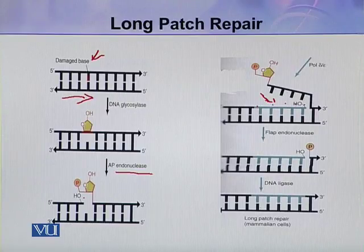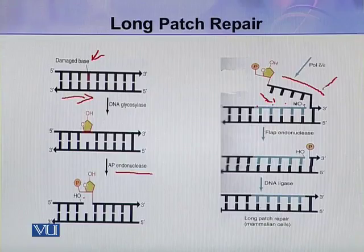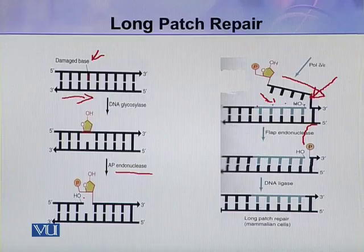The new nucleotides are added to the 3'-hydroxyl end, and the other strand is gradually displaced. After that, flap endonuclease cuts the displaced strand from here, cleaving it completely.